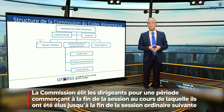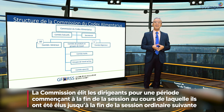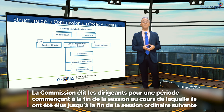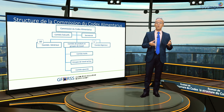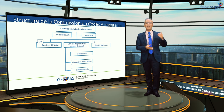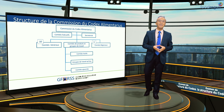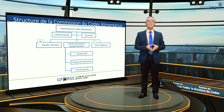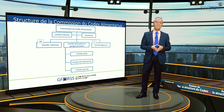La commission élit ses dirigeants pour une période commençant à la fin de la session au cours de laquelle ils ont été élus, jusqu'à la fin de la session ordinaire suivante. Le secrétariat du Codex assiste la commission du Codex Alimentarius dans la mise en œuvre du programme conjoint FAO-OMS sur les normes alimentaires et relève des directeurs généraux de la FAO et de l'OMS.